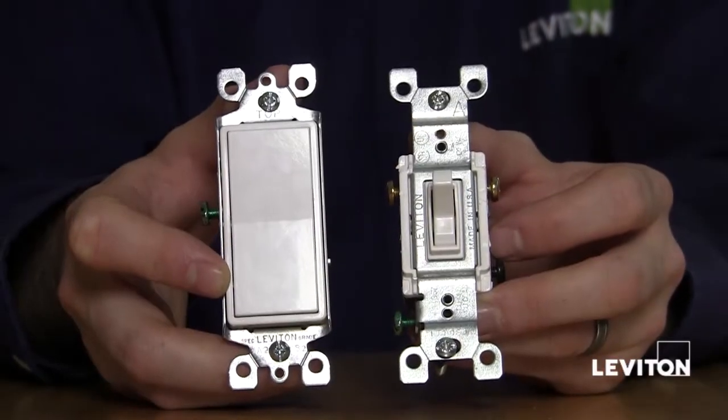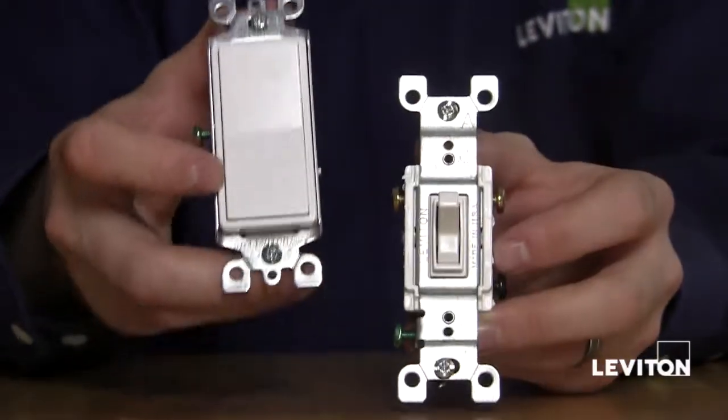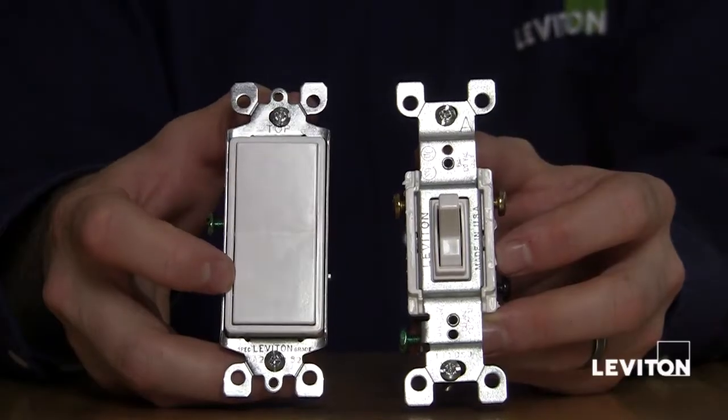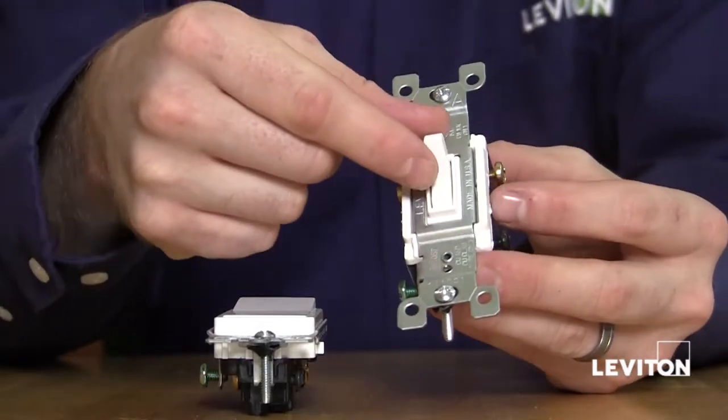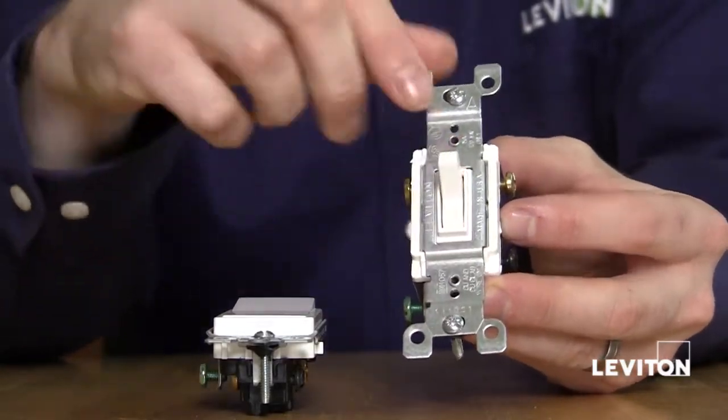So here's how it works. Remember the two traveler wires that go between either switch? One of these wires is always hot. By changing the state of the switch,